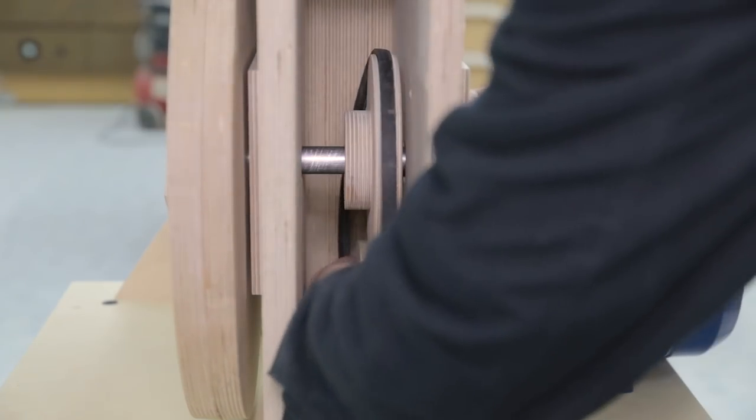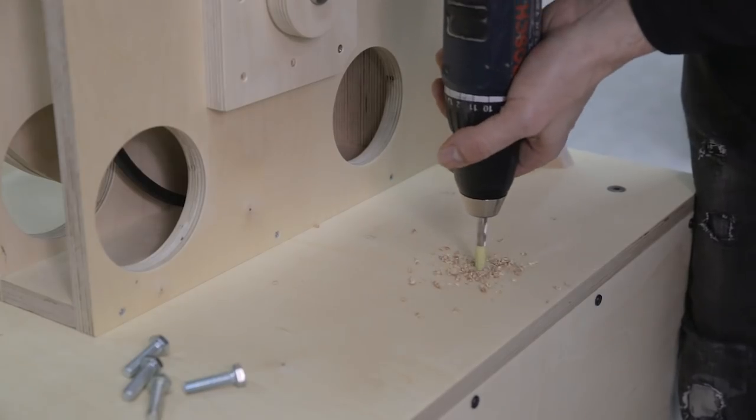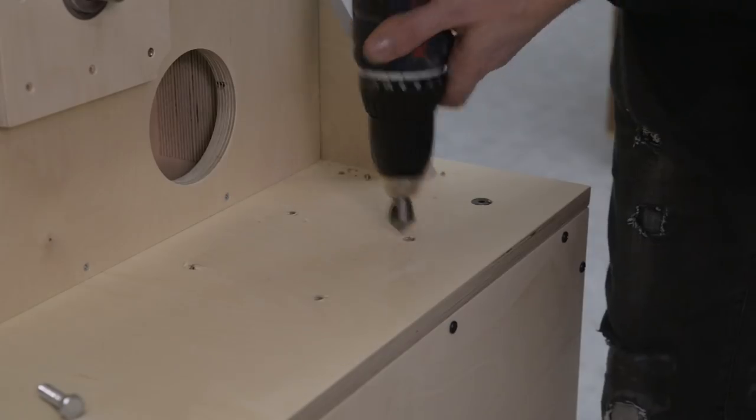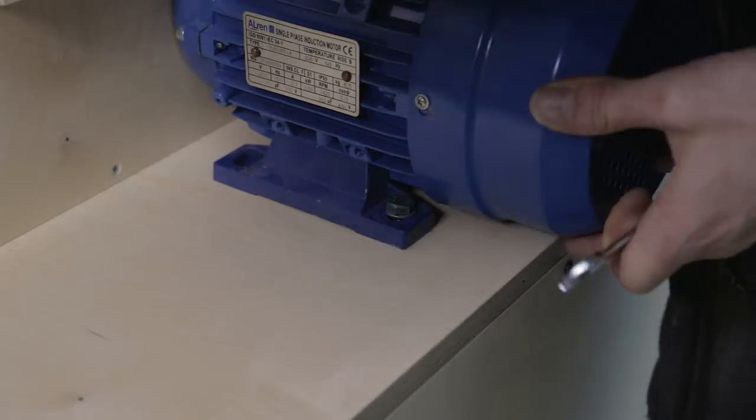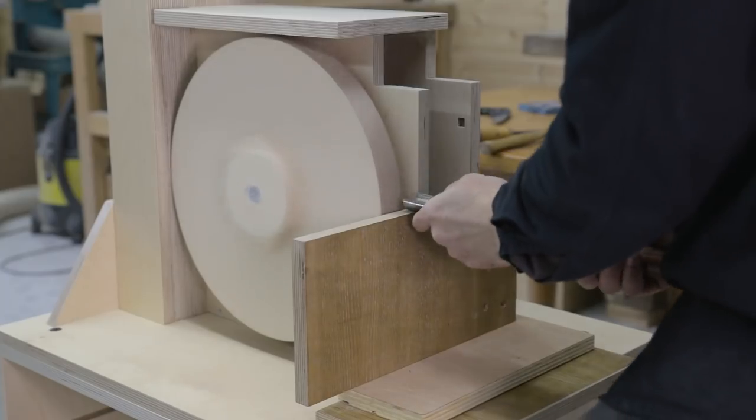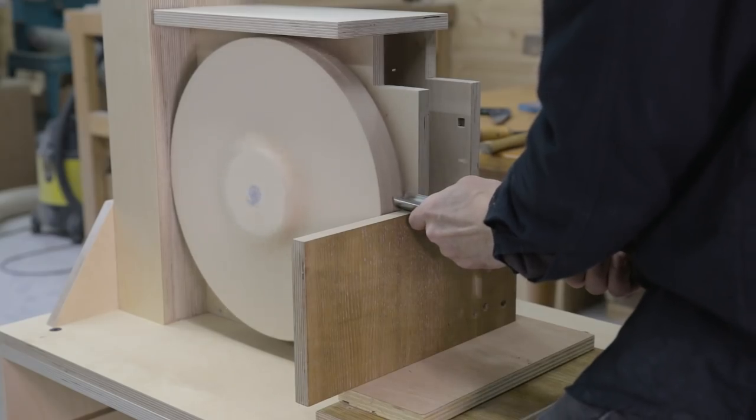I mark the position of its holes and drill them using a bit 1mm smaller than the screw I will use. Now I have enough traction to turn the two wheels.